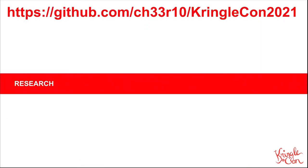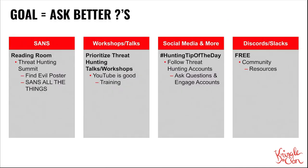So with research, the whole goal is to ask better questions. The number one place I usually go to first is SANS. SANS has a reading room with a ton of articles. SANS also has the threat hunting summit, and I included some links in the GitHub for various YouTube playlists that they have. Another great resource of theirs is the Find Evil poster. So just SANS all the things — SANS your life if you can.